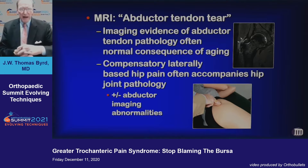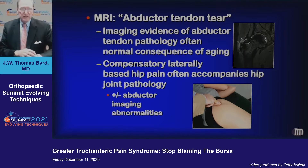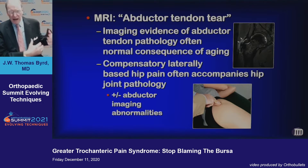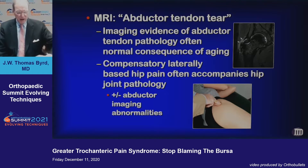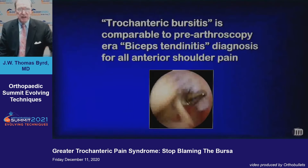At the other end of the spectrum, maybe you get an MRI and it shows an abductor tendon tear. Well, imaging evidence of abductor tendon pathology is often the normal consequence of the aging process. And also, compensatory laterally-based hip pain often accompanies hip joint pathology, which may or may not show imaging evidence of abductor tendon damage.